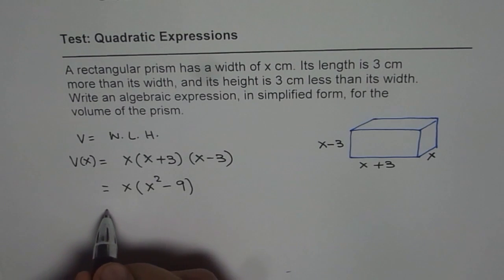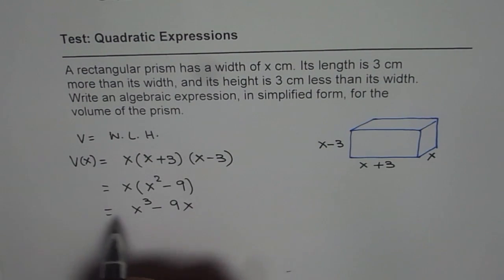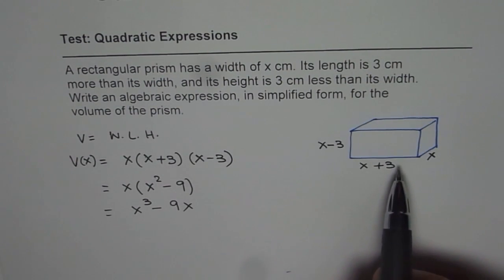And then we will multiply by x. So we get x cubed minus 9x. So that becomes a simplified form, an algebraic expression for the volume of this rectangular prism.